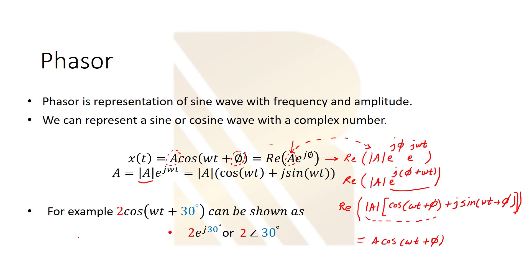Okay, let's make a very good example here to see how we can show the wave. For example, let's say we have a wave 2cos(ωt + 30°). And 2 is amplitude. 30 degrees is our phase.